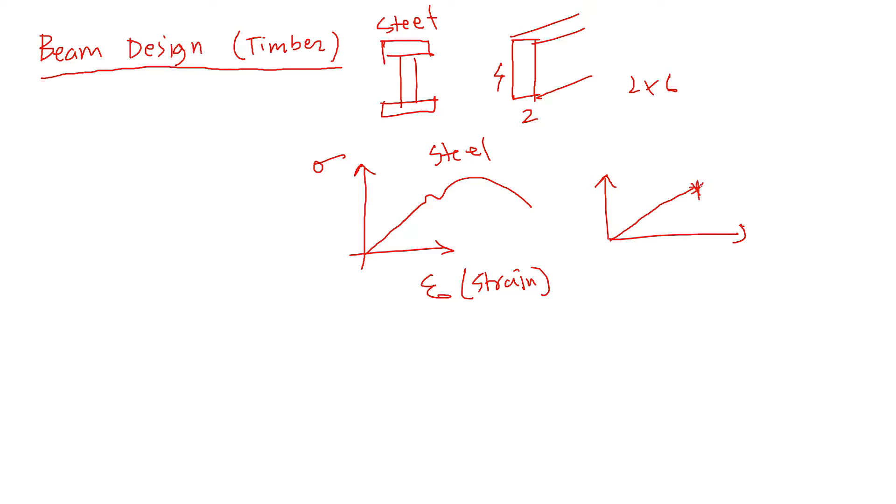For wood, it just goes like this and breaks right here. So the yield point and the ultimate point for wood are the same. Wood does not go under plastic deformation, so there is no plastic deformation—it just breaks after the proportional limit.